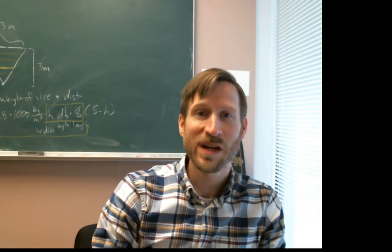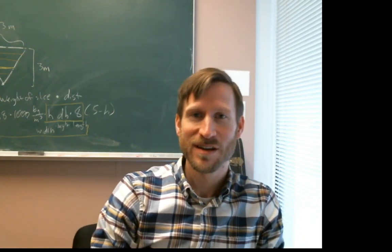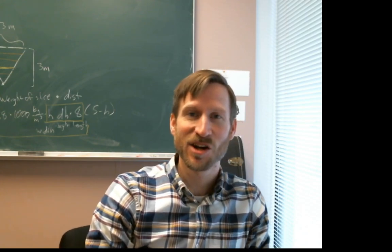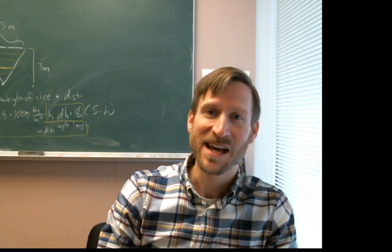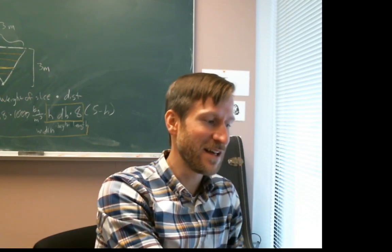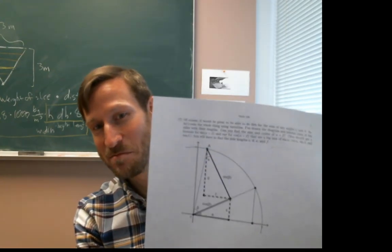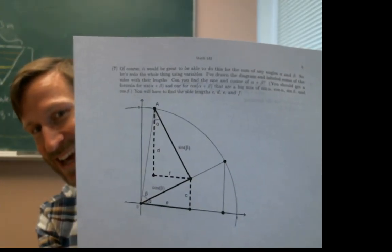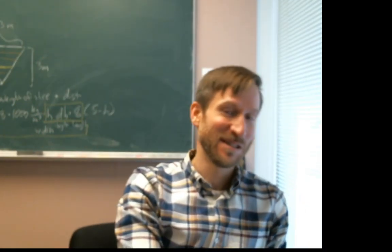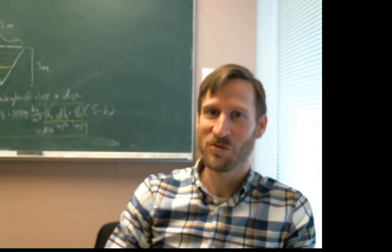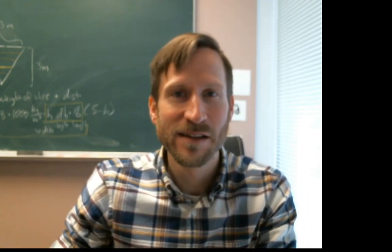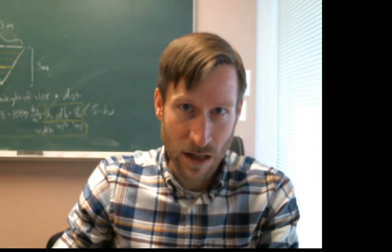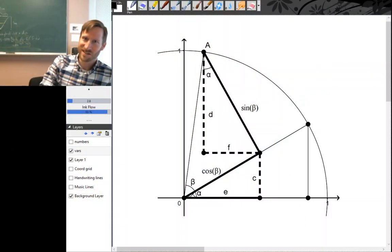Welcome back. We are going to work out what sine and cosine give you for a sum of two angles — that is sine of alpha plus beta and cosine of alpha plus beta. If you haven't tried number 7 on the handout yet, please do so and have a try yourself before watching, because you learn more doing it yourself than watching.